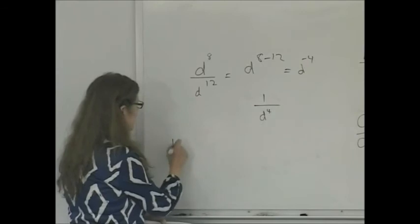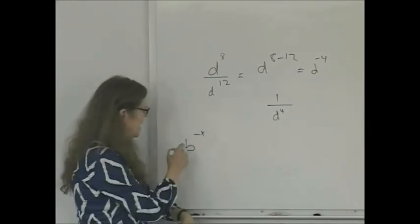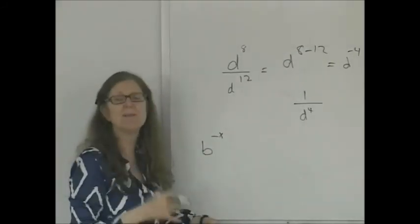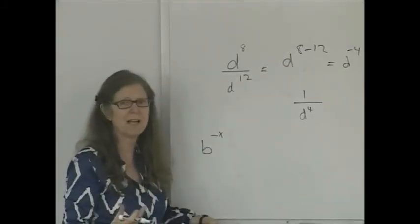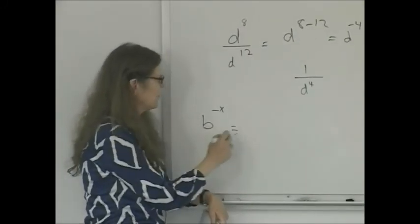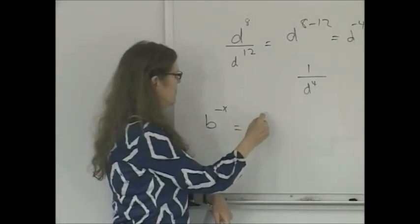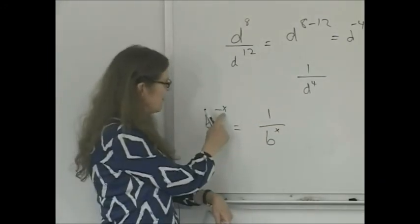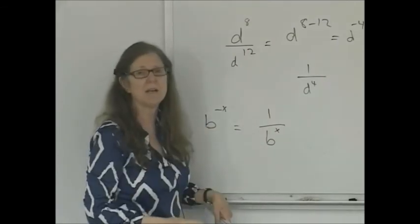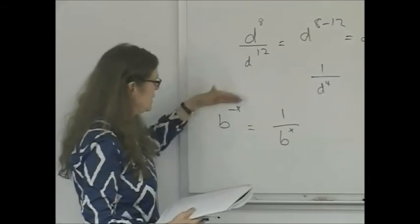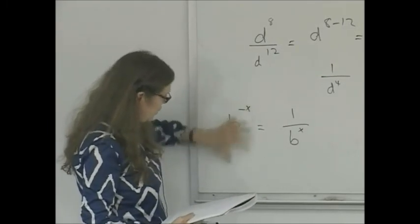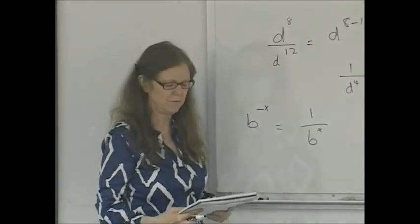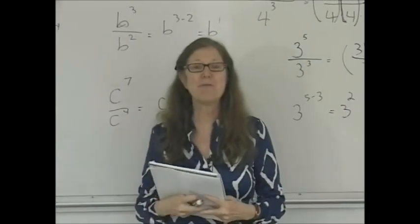What if you have something like B to the negative X? You've got a base that's a letter standing for any number, and an exponent that's also a letter which could stand for any number. How could you express this differently? Well, it's the same thing as 1 over B to the positive X, because this is essentially the definition of a negative exponent. If you move it from the numerator and put the whole expression in the denominator, you change the exponent from a negative to a positive. I think that's all for our video on exponents. Thank you.